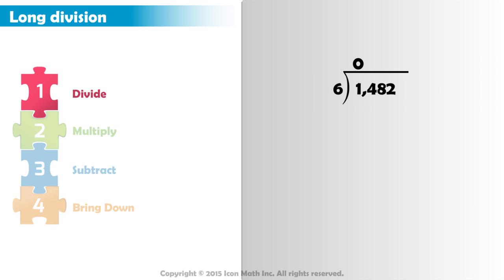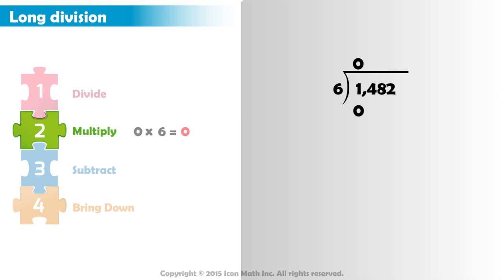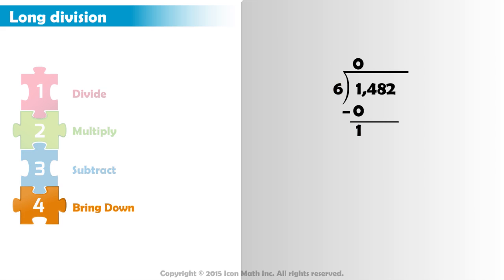And we write 0 as the first digit in our quotient above the 1 from our dividend. Now that we've divided, the next step is to multiply. So we take the digit we wrote in the quotient and multiply it by our divisor, 6. 0 times 6 equals 0. So we write 0 below the 1, the number we divided. Our third step is to subtract: 1 minus 0 equals 1. After subtracting, we note that we cannot evenly divide 1 by 6, so we bring down the next digit from our dividend. Bring down the 4. Now we have 14, and we use it as the new dividend.